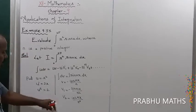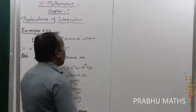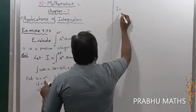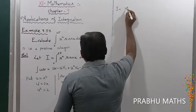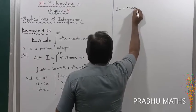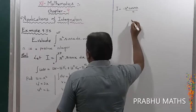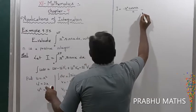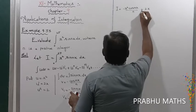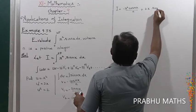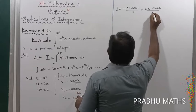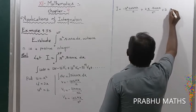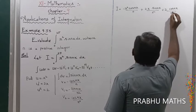Since there are two times of differentiation and two times of integration, applying Bernoulli's formula gives: I = x²·(−cos(nx)/n) − 2x·(−sin(nx)/n²) + 2·(cos(nx)/n³), evaluated from 0 to 2π.